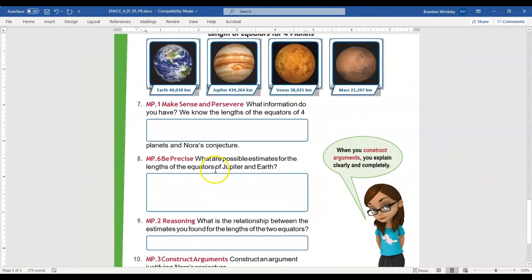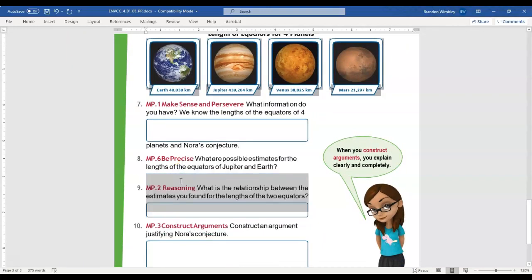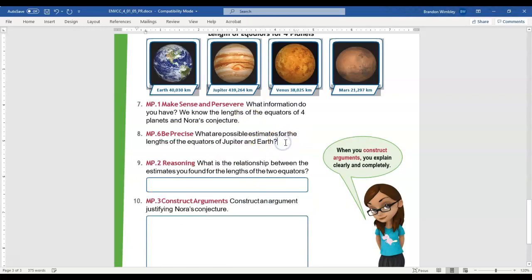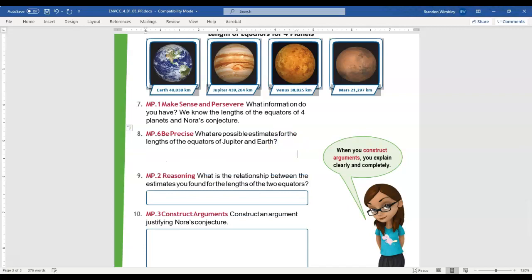Now remember, we need to explain clearly, as it's reminding us down here. I'm going to zoom out a bit so we can see more of this. And it's not going to let me type in these boxes, so I'm just going to delete them to get rid of them. What are possible estimates for the lengths of the equators of Jupiter and Earth? So possible estimates means we're rounding. So rounded to the nearest - and what place values should we round to? Well, Jupiter's in that 100,000, so I'm going to round it to the 100,000. Round it to the nearest 100,000.